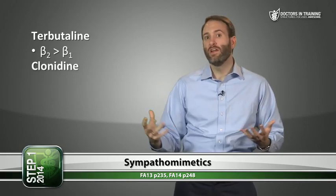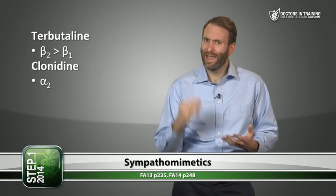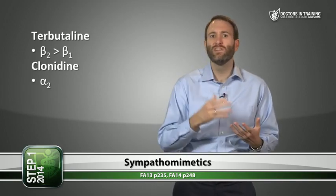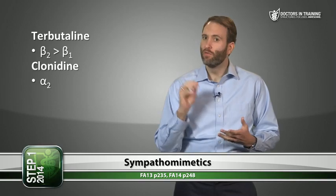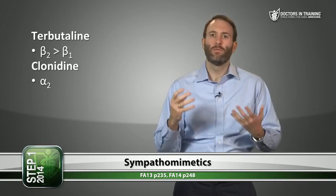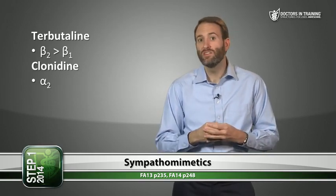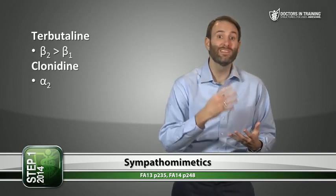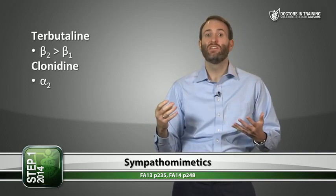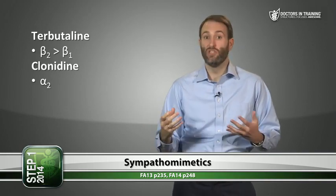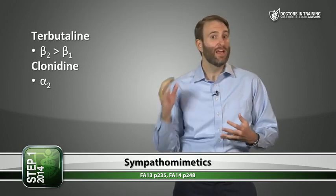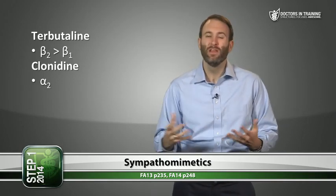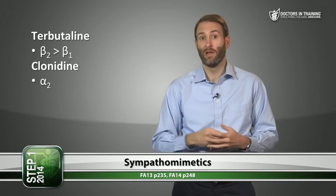Clonidine is an alpha-2 agonist, which is very different. By stimulating alpha-2, it decreases the overall secretion of norepinephrine from the presynaptic neuron, and so can be used to decrease blood pressure. However, you must be careful with clonidine: stopping it abruptly can cause significant rebound hypertension.